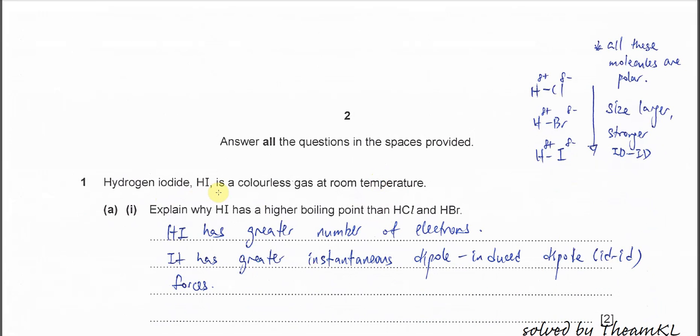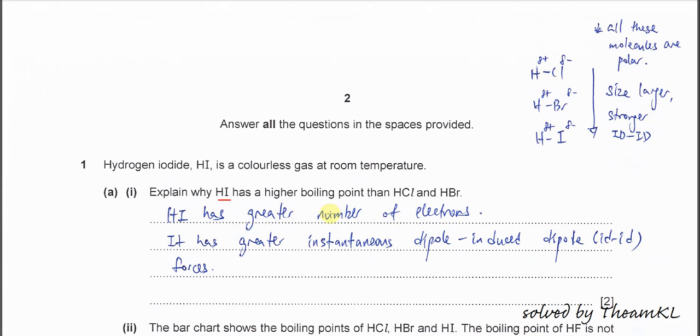Hydrogen iodide is a colorless gas at room temperature. Part 1: Explain why HI has higher boiling point than HCl and HBr. First you need to understand the three molecules in the question. They are all polar molecules, which means all these molecules will have permanent dipole-permanent dipole forces.